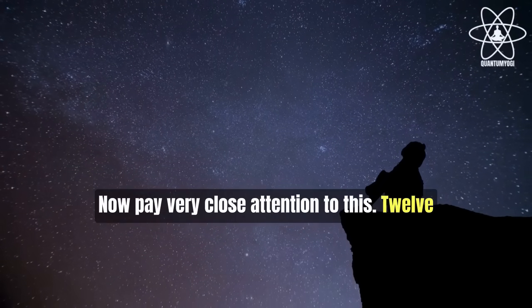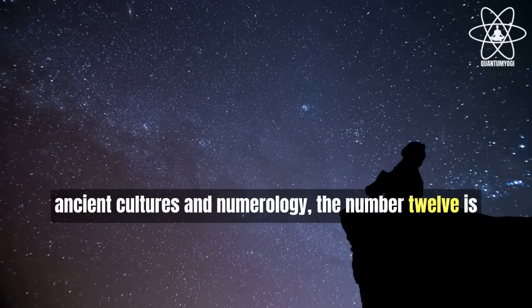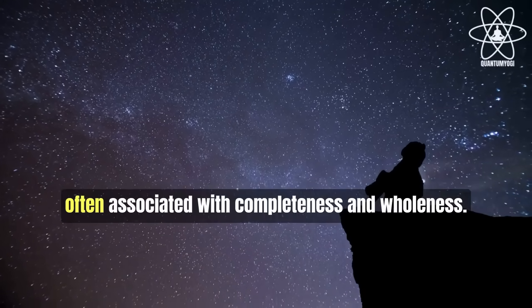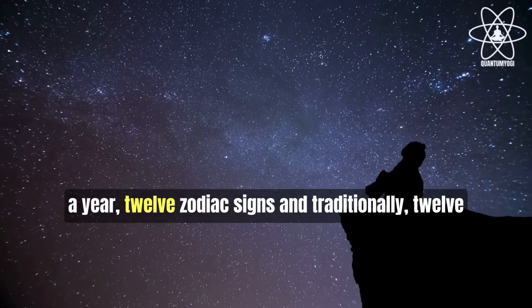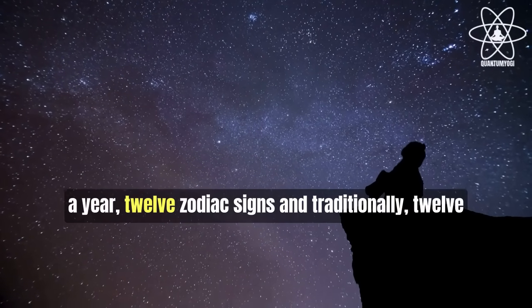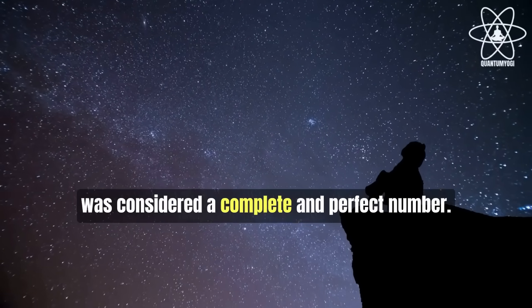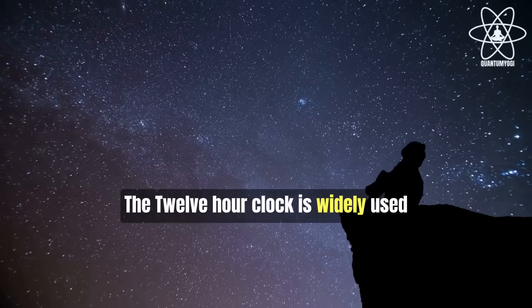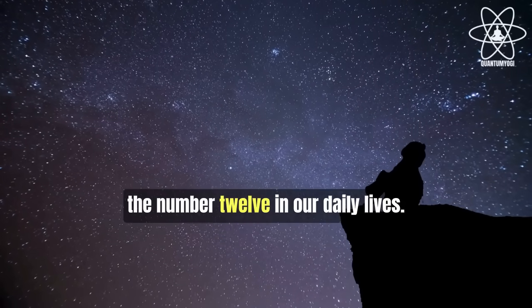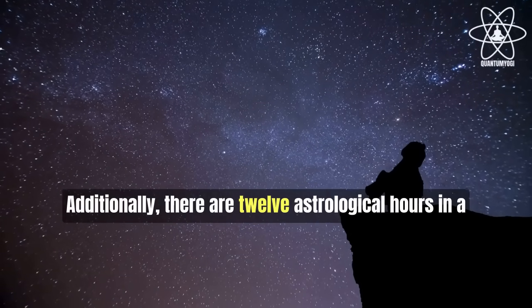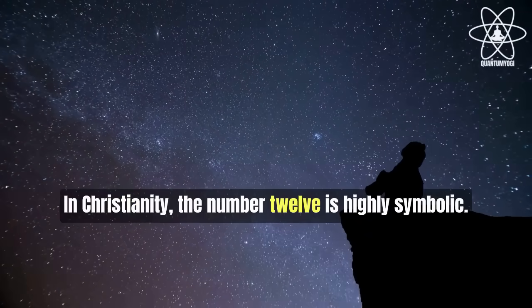Now pay very close attention to this. 12 is one of the auspicious numbers across many ancient cultures in numerology. The number 12 is often associated with completeness and wholeness. This is why there are 12 months in a year, 12 zodiac signs, and traditionally, 12 was considered a complete and perfect number. The 12-hour clock is widely used in measuring time, emphasizing the significance of the number 12 in our daily lives. Additionally, there are 12 astrological hours in a day, each ruled by a different planet.